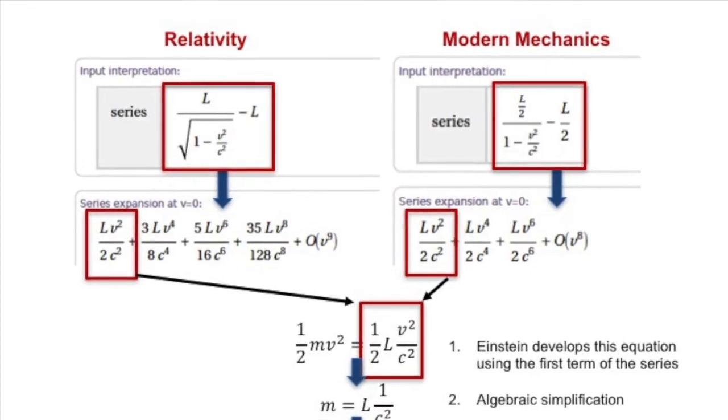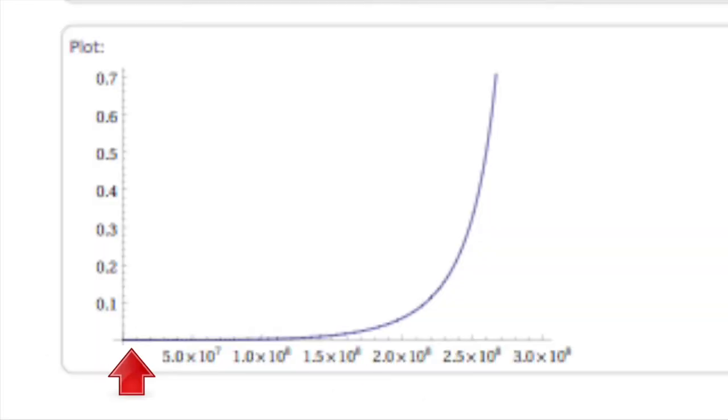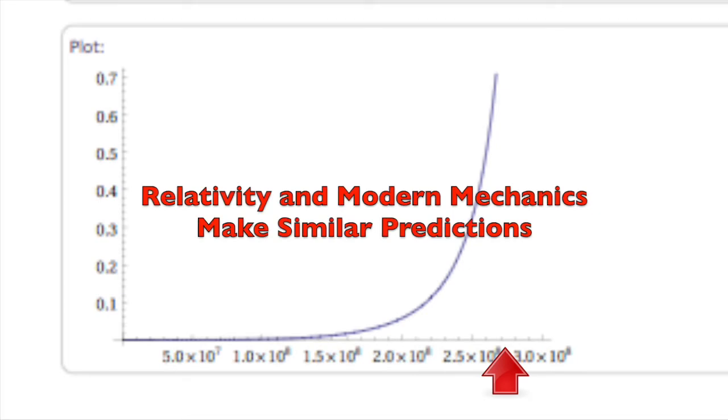Now, while the two difference equations are not identical, they are close. If we graph their difference, notice that it is nearly zero until velocity approaches the speed of light. This means that both theories make similar predictions.